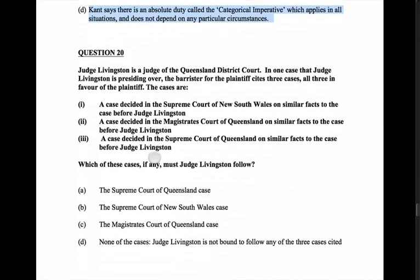Question 20: Judge Livingston is a judge of the Queensland District Court. The barrister for the plaintiff cites three cases on similar facts: one decided in the Supreme Court of New South Wales, one in the Magistrates Court of Queensland, and one in the Supreme Court of Queensland. Which must Judge Livingston follow? This is a question about the doctrine of precedent — you must follow courts that are higher than you in your own hierarchy.